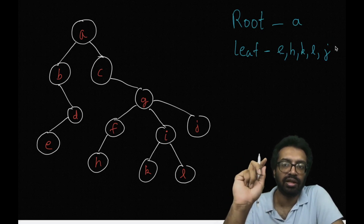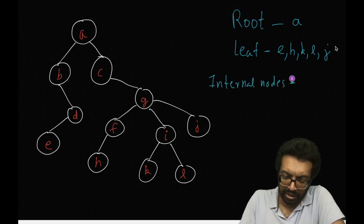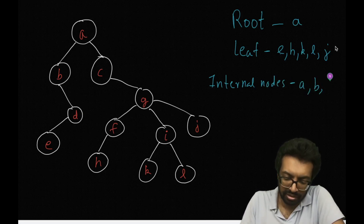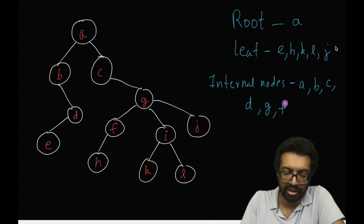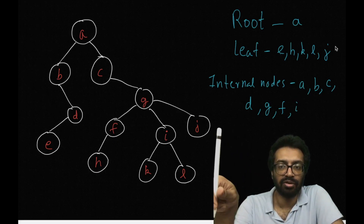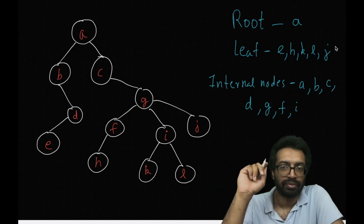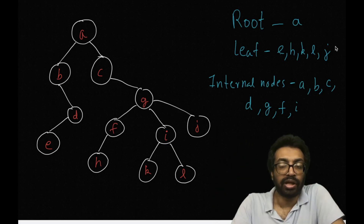What about the internal nodes? The internal nodes are A, B, C, D, G, F, and I. These are the internal nodes. Is J an internal node? No, J is a leaf node. What about external nodes? External nodes are the same as the leaf nodes.